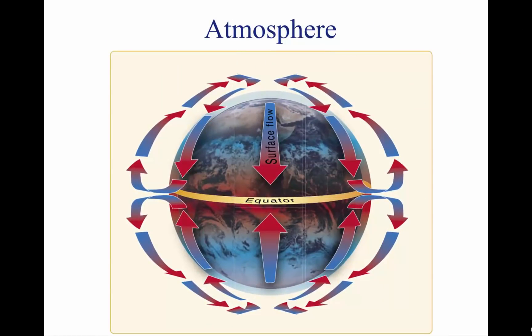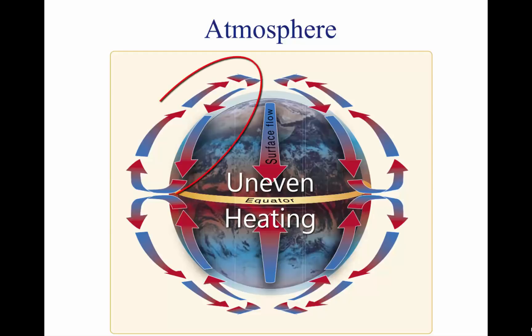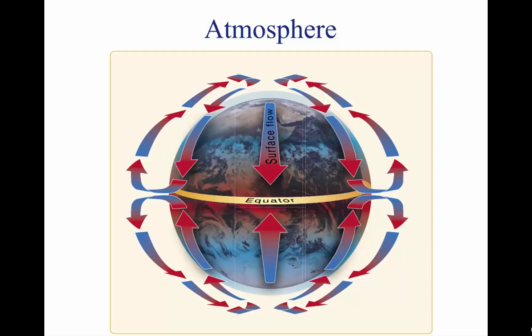Certain factors combine to set the atmosphere in motion, but a major factor is the uneven heating of the Earth's surface. Earth is warmed by energy radiating from the sun. This process causes a circular motion that results when warm air rises and is replaced by cooler air. Because the Earth has a curved surface that rotates on a tilted axis while orbiting the sun, the equatorial regions receive a greater amount of heat from the sun than the polar regions.